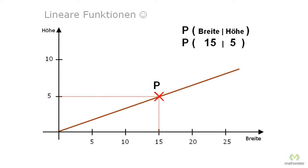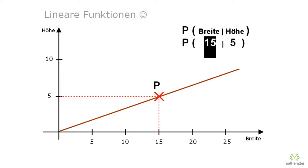This is definitely easy. But what happens if I put a dot somewhere in between where we could not read it directly? Therefore, we need a different description — not the graph, but one in the form of an equation where we use a numeric value, a width, and then automatically calculate the height by a formula.